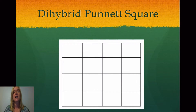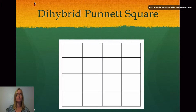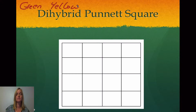That leads us to doing dihybrid Punnett squares. Dihybrid Punnett squares are just a little bit different than monohybrid Punnett squares because we're looking at two traits at the same time. So let's look at green seeds and yellow seeds, and then we're also going to look at the smooth or round seeds and the wrinkled seeds.